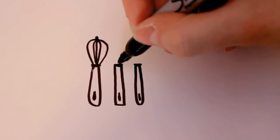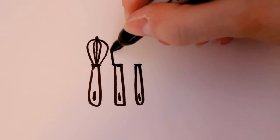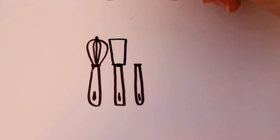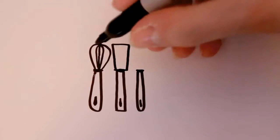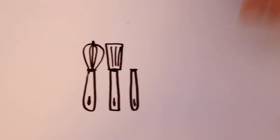For the second one, I'm going to draw a frying flipper, which is just an upside-down trapezoid shape. Then add a few lines in there to show that it's a flipper.